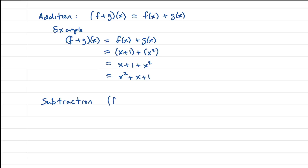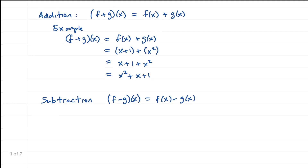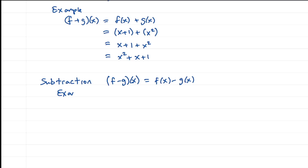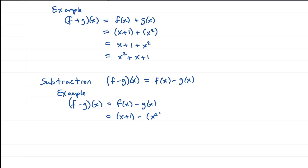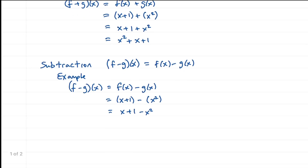Subtraction: this will be f minus g of x, and that is f of x minus g of x. In our example, f minus g of x equals f of x minus g of x. Our f of x is x plus 1, and we subtract g of x which is x squared. So we get x plus 1 minus x squared, which is negative x squared plus x plus 1.